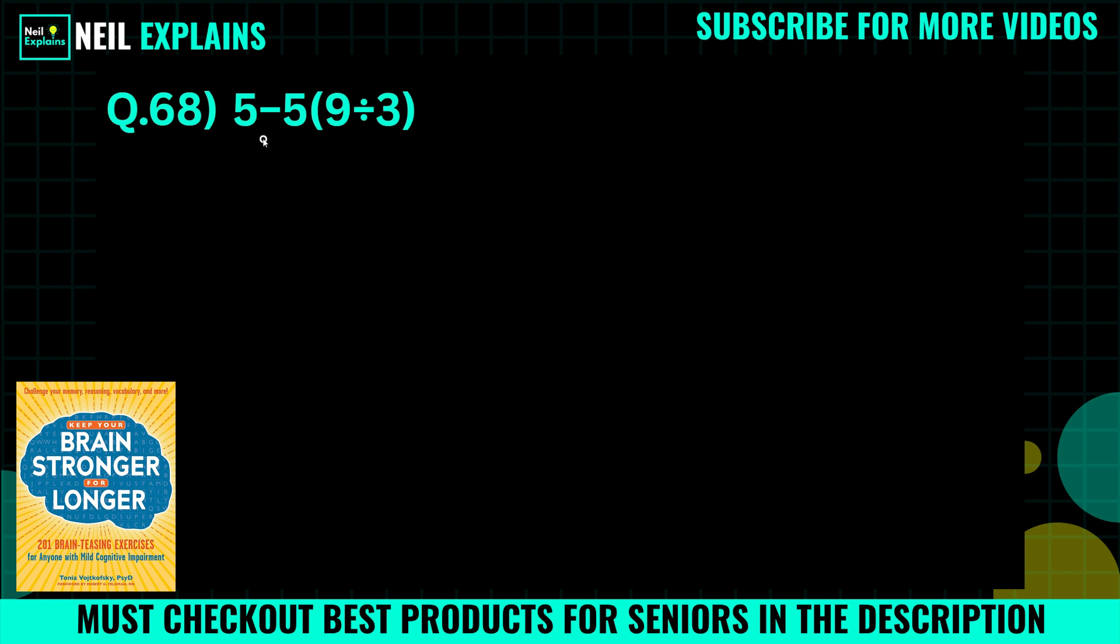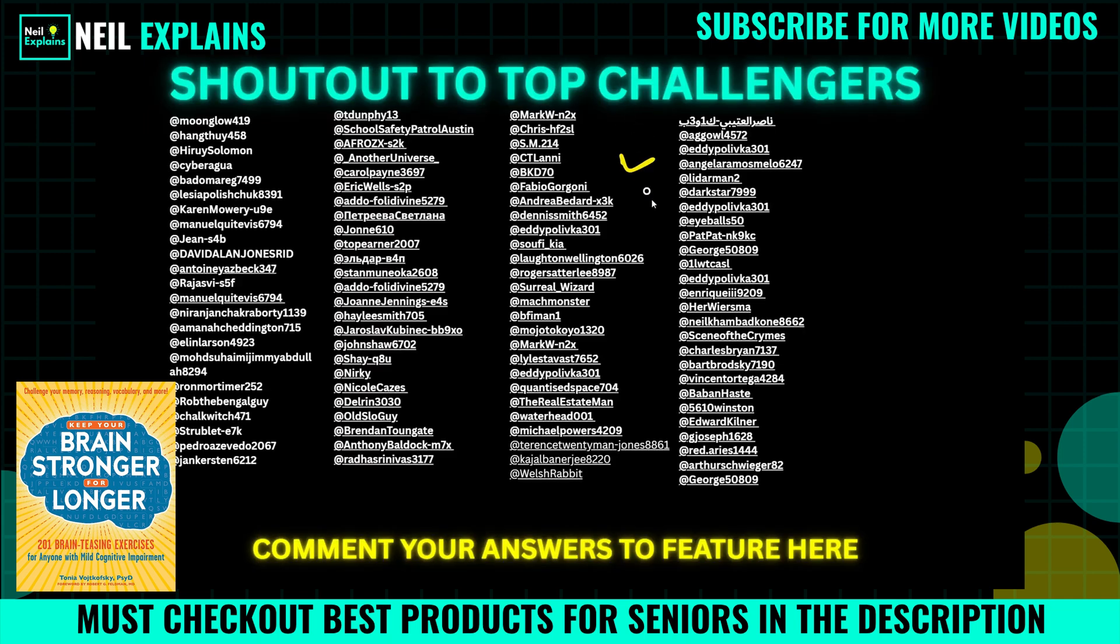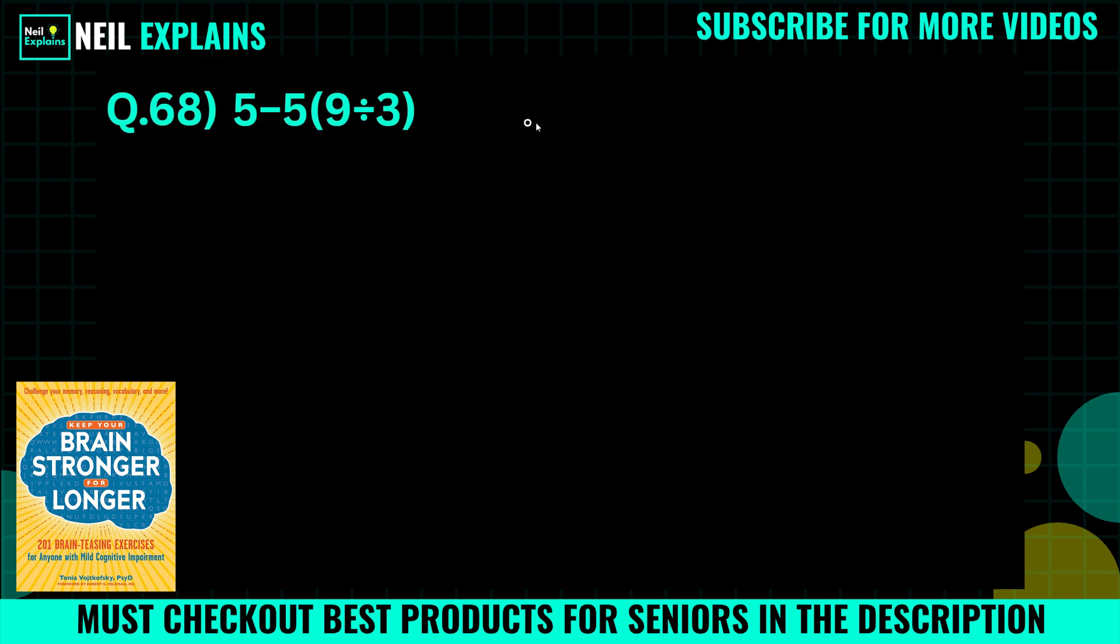Hello seniors and welcome back to Neil Explains. Today's problem: 5 minus 5 parenthesis 9 divided by 3. This is very tricky for many, but I know many can solve this in a better way. If you already solved this, then comment your answer. I am solving for those who don't follow or don't get the right answer.